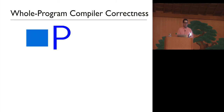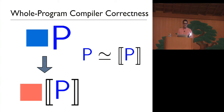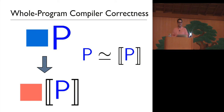We start with a whole source program P. In this talk, source programs will be blue. Then we compile it to our target language — I represent target code as red, and compilation by these brackets. Whole program compiler correctness says P and its compilation, in some sense, have the same behavior: they produce the same effects, or they're in bi-simulation.